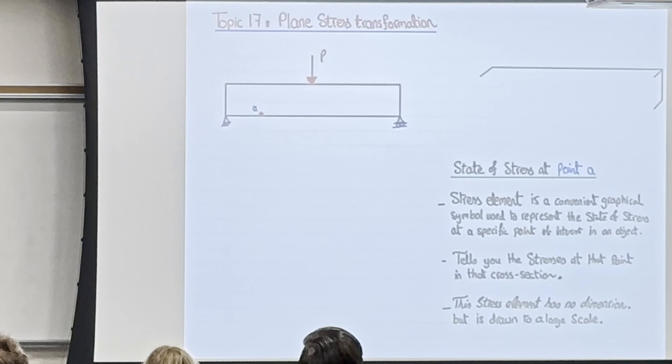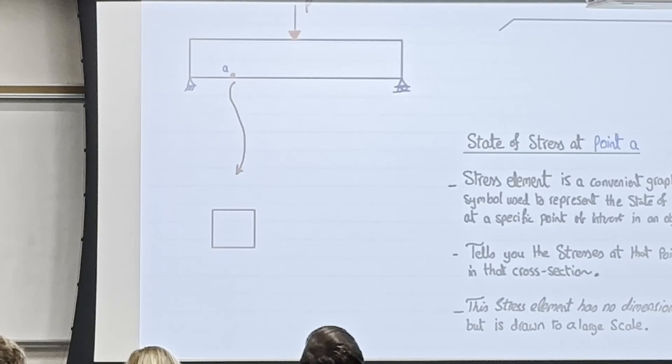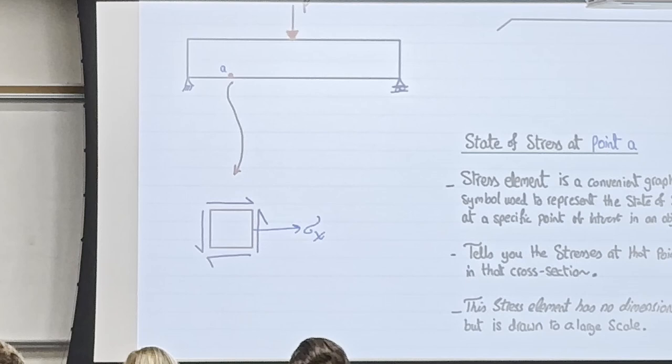At point A, what I basically want to find is what point A 'feels.' It's a point, but I exaggerate it by drawing a stress element. This square is dimensionless — it's very small — and I want to know what is the shear stress at A, what is the stress in x at A, and what is the stress in y at A.